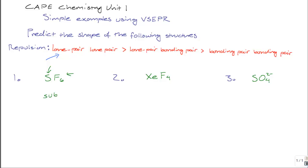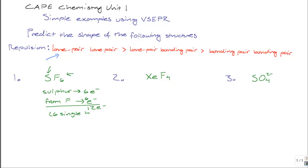Sulfur itself has six electrons in its outer shell. Sulfur has six electrons, and it is bonded to six fluorine atoms, each of which donates one electron to the single bonds between sulfur and fluorine. So from all of the fluorine atoms, another six electrons are donated, which leads to a structure with twelve electrons involved in bonding — six single bonds — and there are no non-bonding pairs or lone pairs on this molecule.